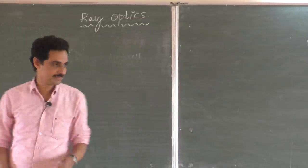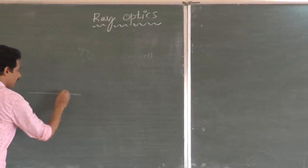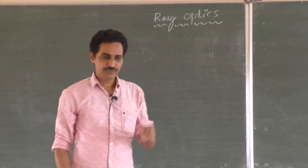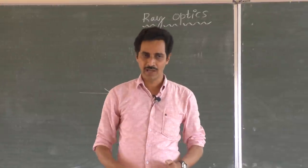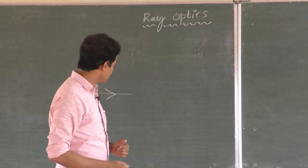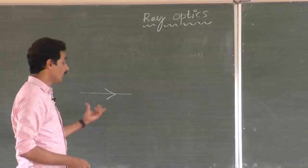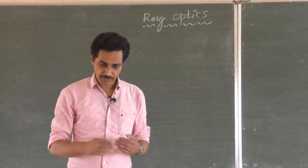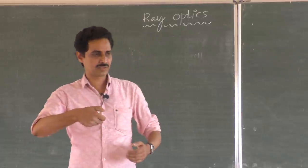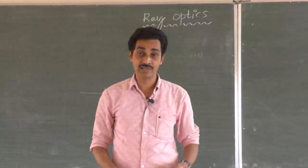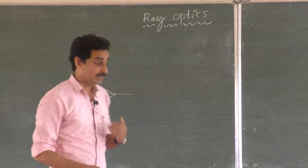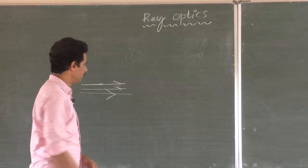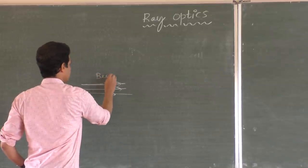We represent a light ray as a straight line with an arrow. How long should it be? How thin should it be? Suppose you have many rays clubbed together — like a torch light. Whether that is a ray? No, it is a collection of rays, and that is called a beam of light. Collection of rays is called a beam.